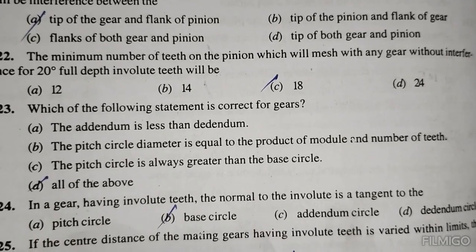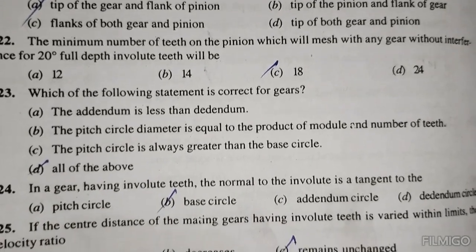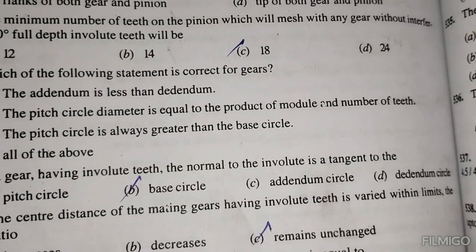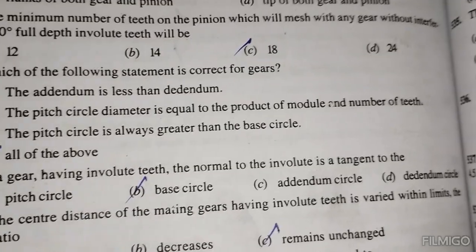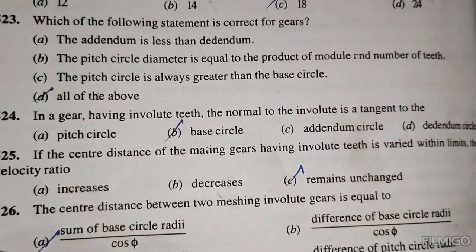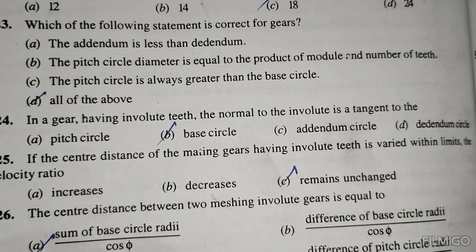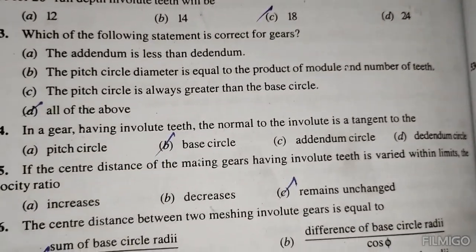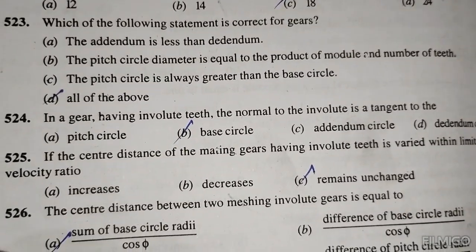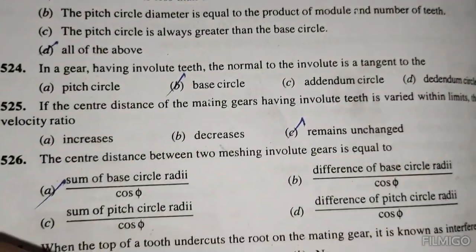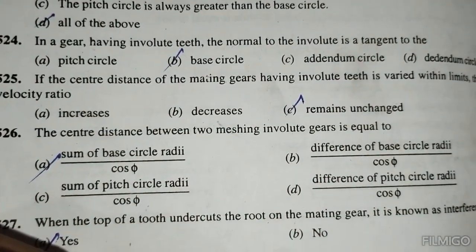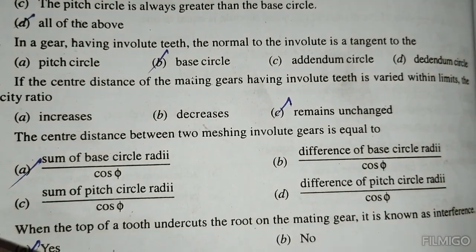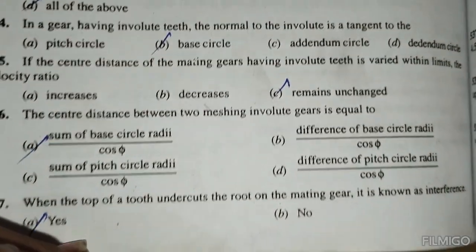In a gear having an involute tooth, the normal to the involute is tangent to the base circle. If the center distance of mating gears having involute teeth is varied within limits, the velocity ratio remains unchanged. The center distance between two meshing involute gears is equal to the sum of base circle radii divided by cosine of the pressure angle.